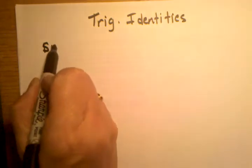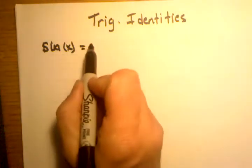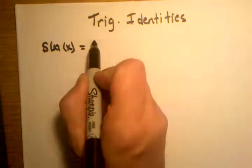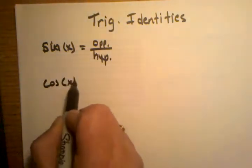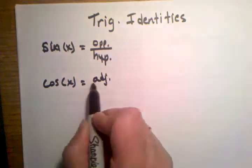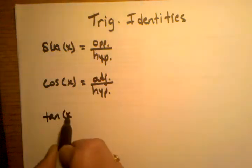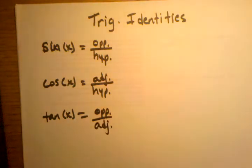By now we know the three basic trig functions. Sine of x equals the measurement of the opposite side over the hypotenuse. Cosine of x equals the measurement of the adjacent side over the hypotenuse. And then tangent of x equals opposite over adjacent. That's what we know so far.